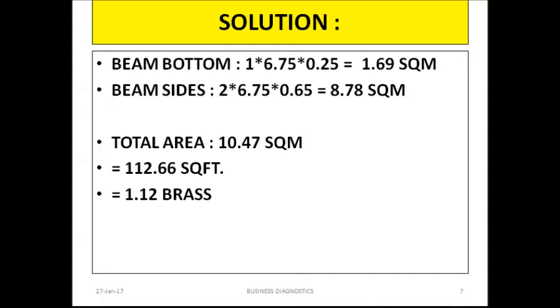So friends, till now we have seen two types of footings: box footing, which was square, and trapezoidal footing, which was also square. We calculated the sides for box footing and trapezoidal footing, and then we went for the roof beam. Today we also saw a short video of the actual site. And now we will go for an RCC slab.